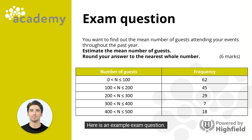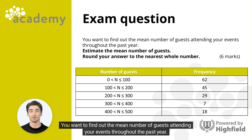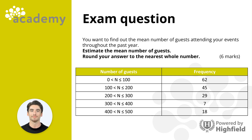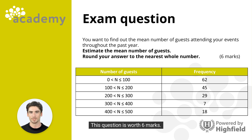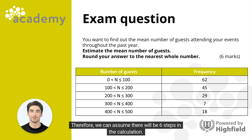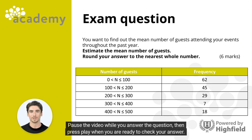Here is an example exam question. Use your knowledge from this session to calculate the mean of grouped frequency. You want to find out the mean number of guests attending your events throughout the past year. Estimate the mean number of guests and round your answer to the nearest whole number. This question is worth 6 marks, so we can assume there will be 6 steps in the calculation. Pause the video while you answer the question, then press play when you're ready to check your answer.